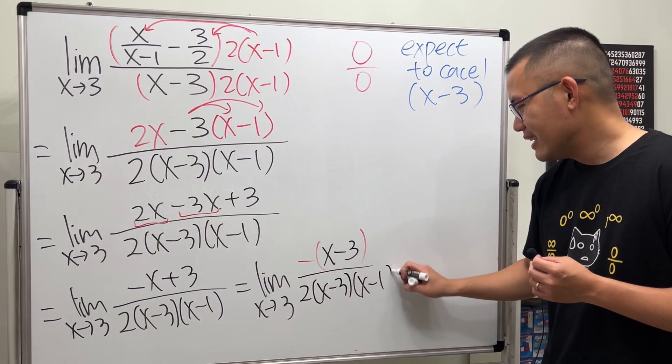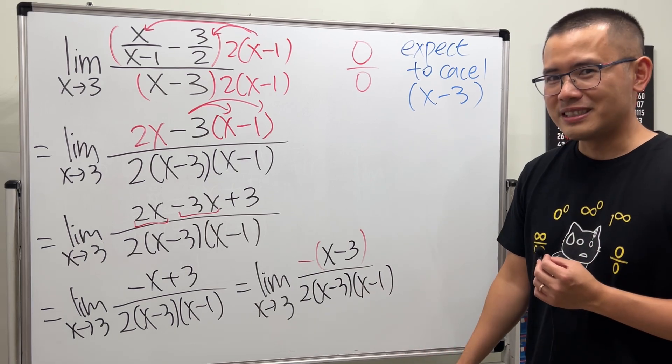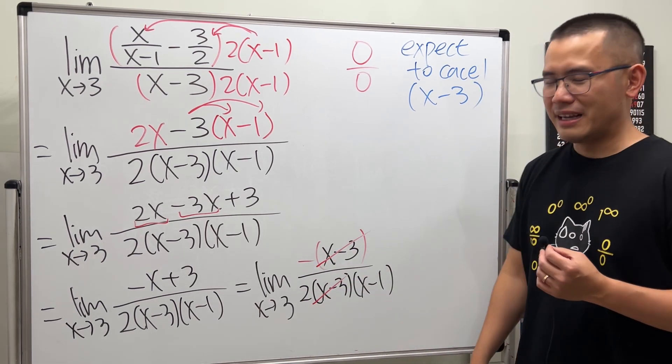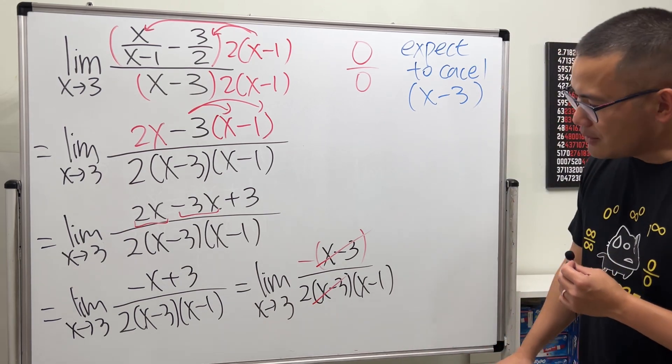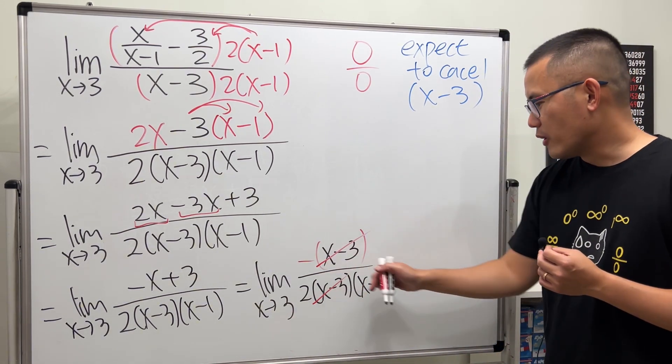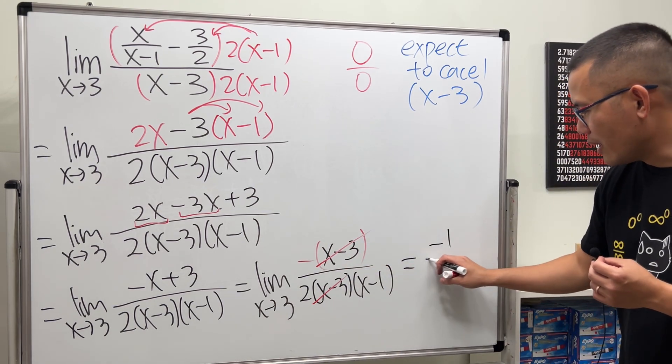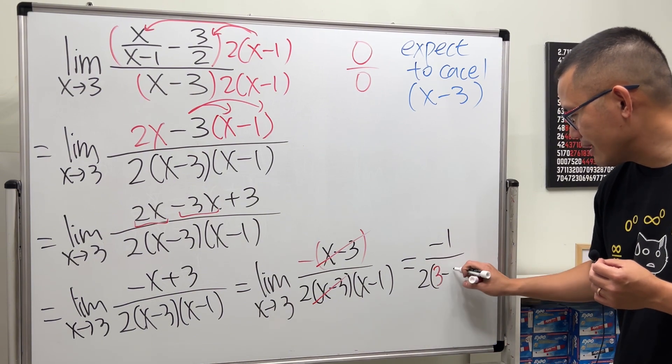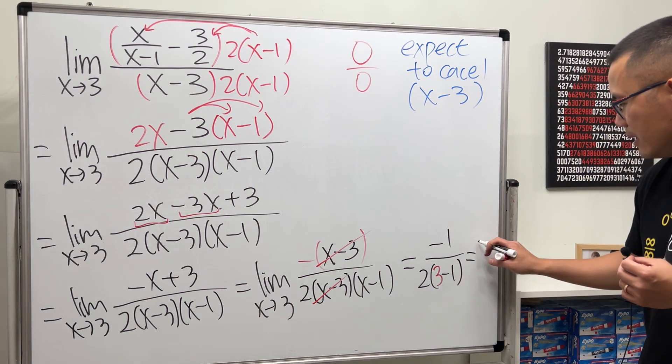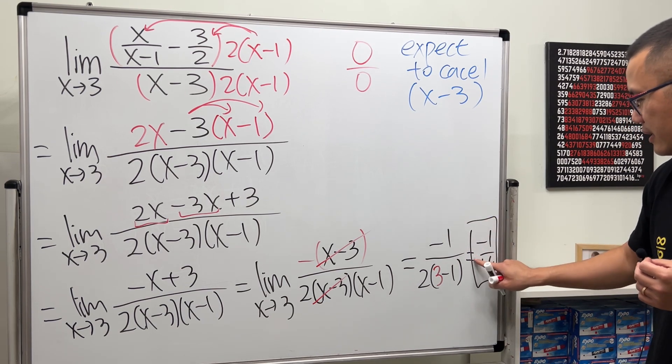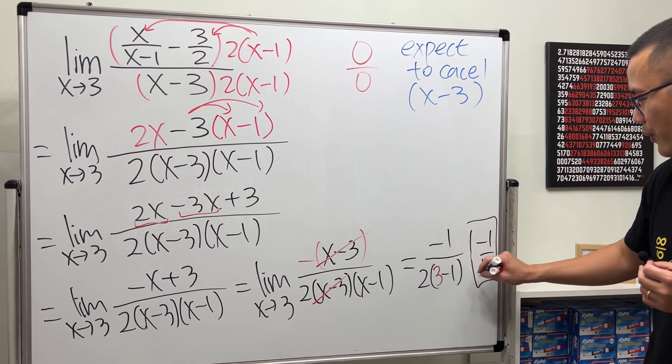And as you can see, you should stay subscribed to my channel, right? Because now we can cancel out the x minus 3. Finally, plugging 3 into the remaining x, so on the top is negative 1. On the bottom we have 2 times 3 minus 1. Work that out: negative 1 over 2 times 2, which is 4. Final answer: negative 1 over 4.